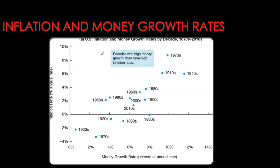By decade, all the way from the 1870s to the 2010s, and also the corresponding average inflation rate for each of these decades. You can see that decades which had very high inflation rates — specifically the 1940s, 1910s, and 1970s — also have correspondingly very high money growth rates. As a general trend, whenever we have a lower money growth rate, the inflation rate also tends to go down. This data was for the United States.